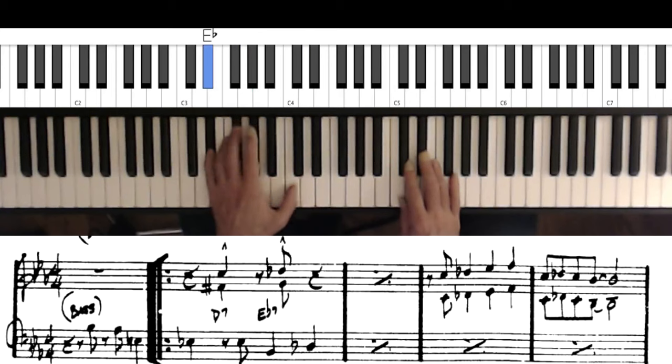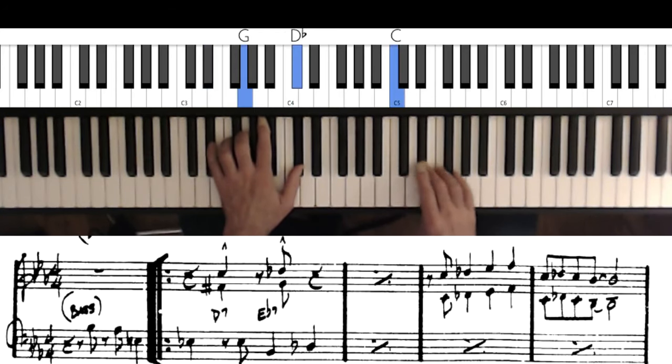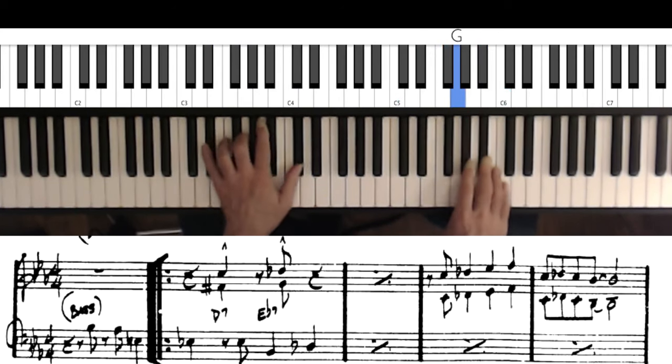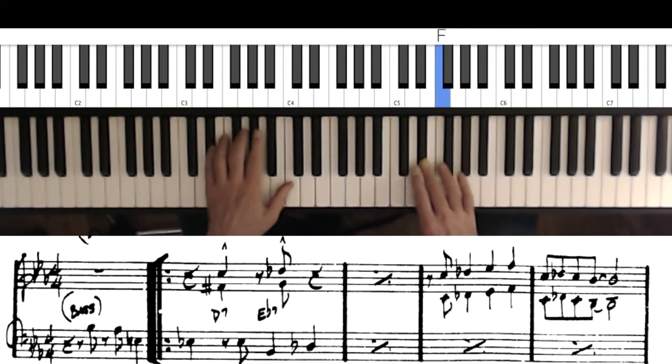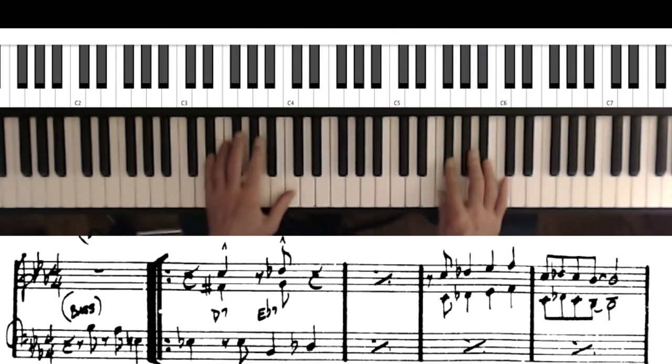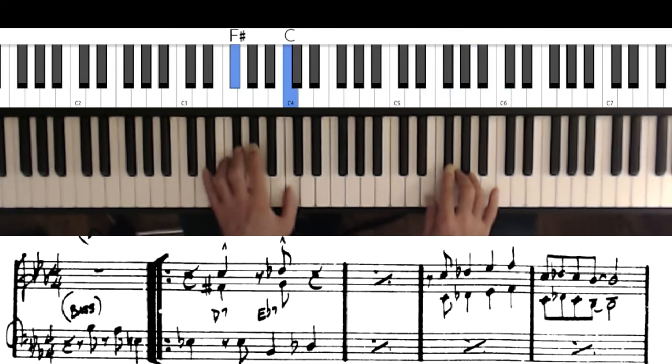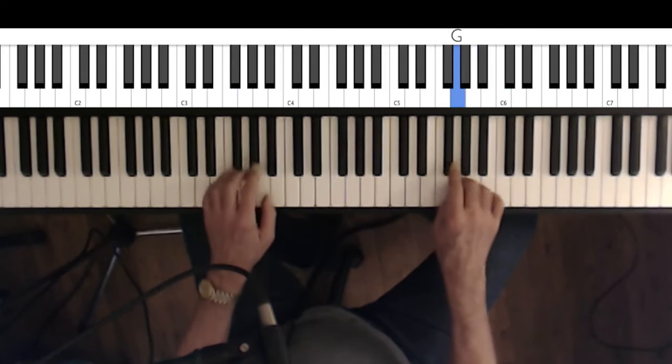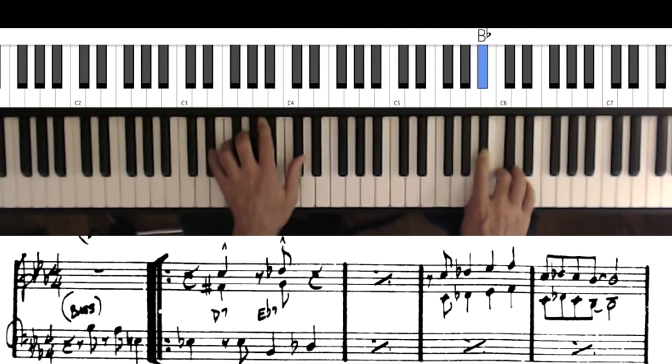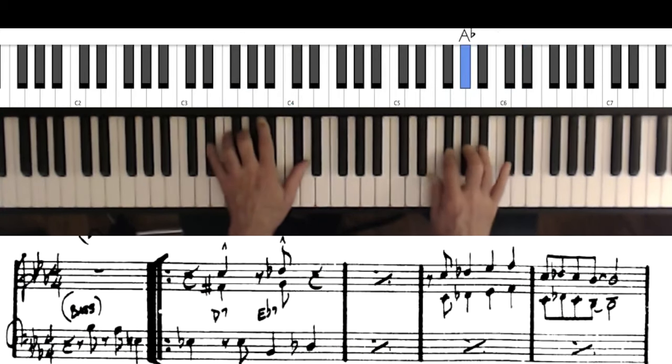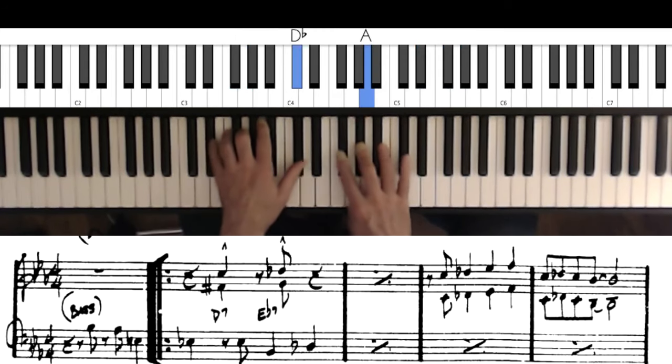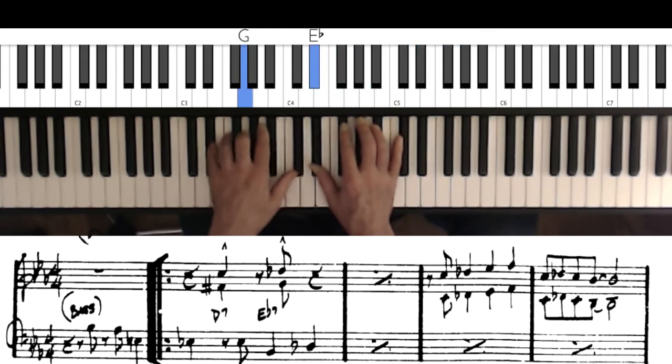But while you're on the E flat chord, the C blues scale works just as well. Because you have these two notes here. You also have them in the scale. Another four bars.